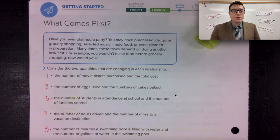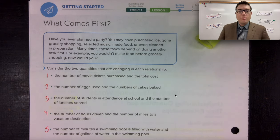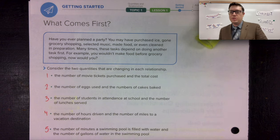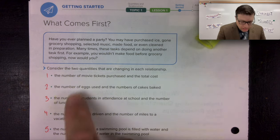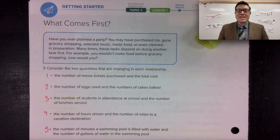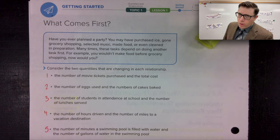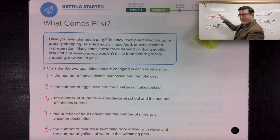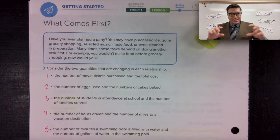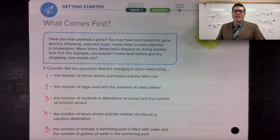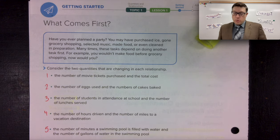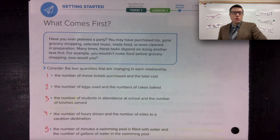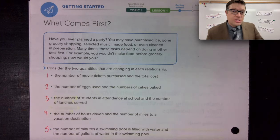Our situation: have you ever planned a party? You may have purchased ice, gone grocery shopping, selected music, made food, or even cleaned in preparation. Many times these tasks depend on doing another task first. For example, you wouldn't make food before grocery shopping. The idea behind that is what is dependent versus independent. We need to analyze a description of what's happening and decide which quantity is dependent and which is independent.